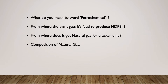They asked questions about my industrial training, like: what do you mean by the word petrochemical? Then they asked from where did the plant get natural gas for its cracker unit — it was actually from the HVJ pipeline. They also asked the full form of HVJ, which is Hazira, Vijaypur and Jagdishpur pipeline. Then the fourth question was about the composition of natural gas.